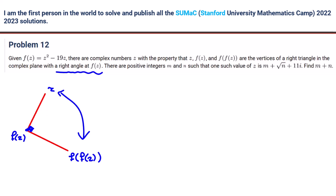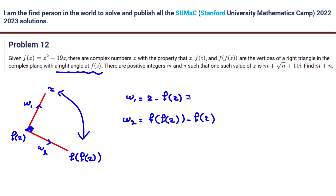W2 is F(F(Z)) minus F(Z). If we write W1 as R1·e^(iθ) and W2 as R2·e^(iα), what's the relationship between θ and α? θ equals α plus π/2.